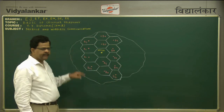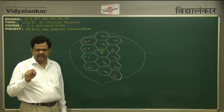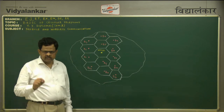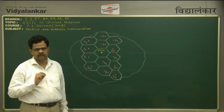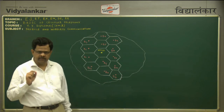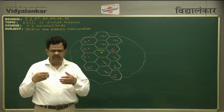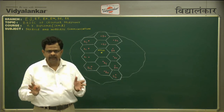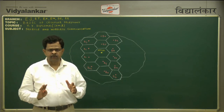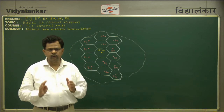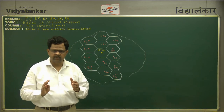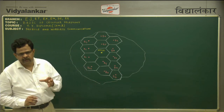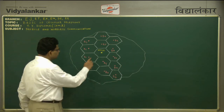The base station is situated exactly at the center of the hexagon. A base station is basically a transceiver, which will transmit and receive information simultaneously. Thereby it will provide full duplex communication. The main and important part in cellular telephony is the MTSO.